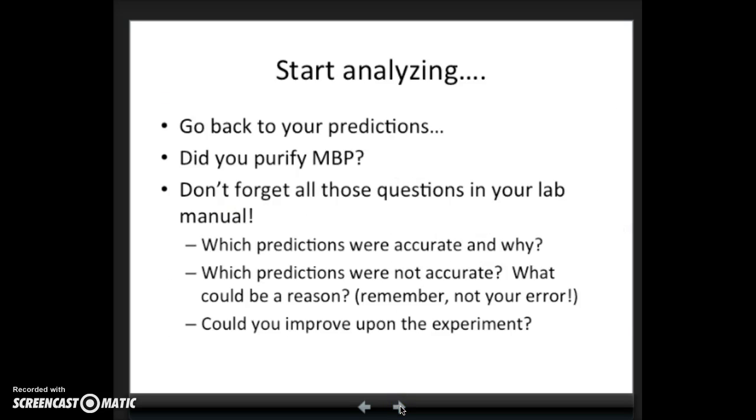Now you've got your gel. You know hopefully what you're measuring, and you've thought about what each of those fractions should contain. So now start analyzing. Go back to your predictions. Did you purify maltose binding protein? And if you think you did, what's your evidence? Don't forget all those questions in your lab manual. They're there to help you and we also expect to see those in your lab writeup. So think about the percentages and how many molecules of maltose binding protein there might be in your sample and in your cell. Which predictions were accurate? Which predictions were not accurate? Then think of a reason. Remember, not your error. So it's not that you didn't pipette correctly. Think about the experimental setup itself. What things could you change that might give you either better results or what could be some explanations for why it either worked or didn't work?